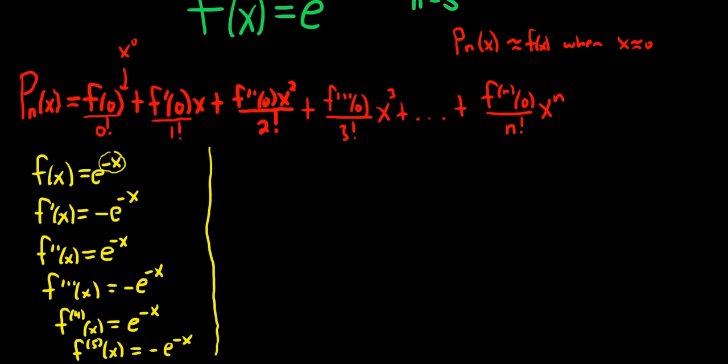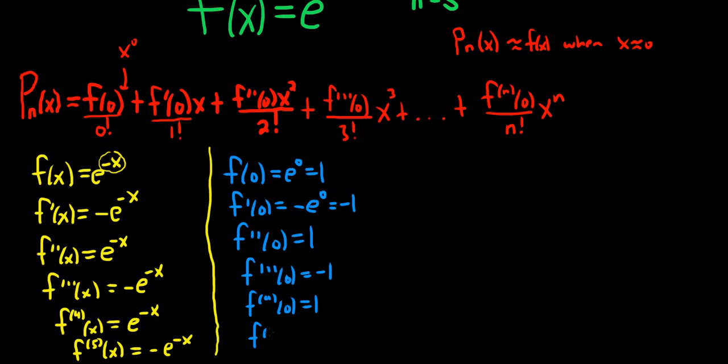Now we have to plug in all of the zeros because it's Maclaurin. So if it was Taylor, you'd plug in a different number, and the formula would be slightly different. So f of 0 is e to the 0, which is simply 1. Then f prime of 0 is negative e to the 0, which is negative 1. f double prime of 0 is 1, f triple prime of 0 is negative 1, the fourth derivative is 1, and the fifth derivative at 0 is negative 1.